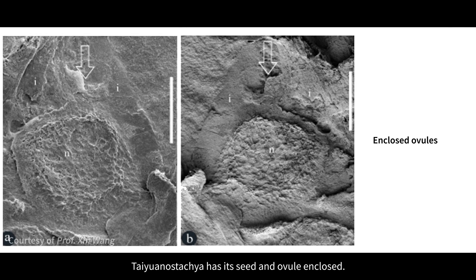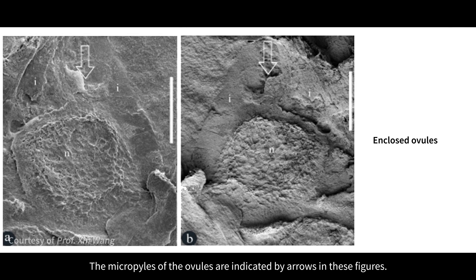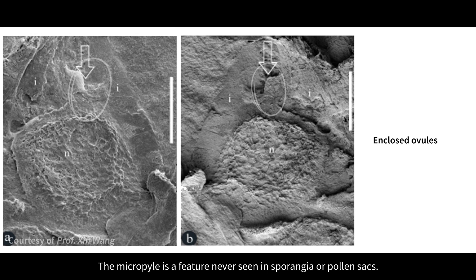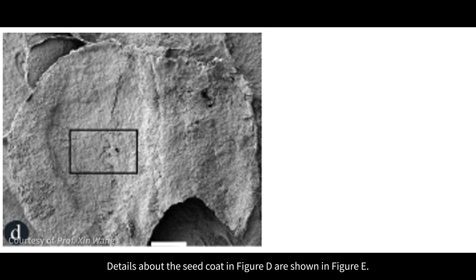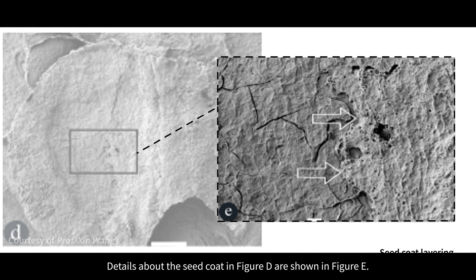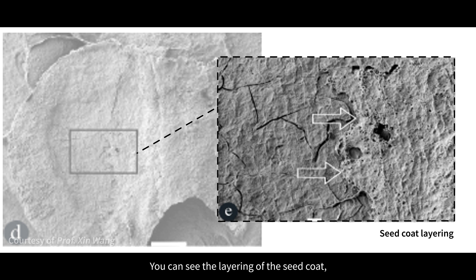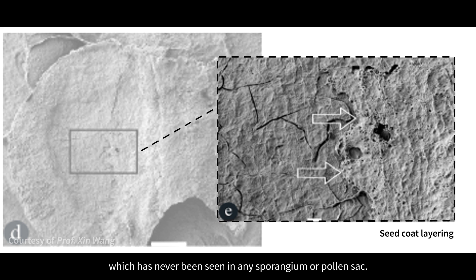Tyuanostechia has its seed and ovule enclosed. The micropiles of the ovules are indicated by arrows in these figures. The micropile is a feature never seen in sporangia or pollen sacks. Details about the seed coat shown in figure D are shown in figure E. You can see the layering of the seed coat, which has never been seen in any sporangium or pollen sack.